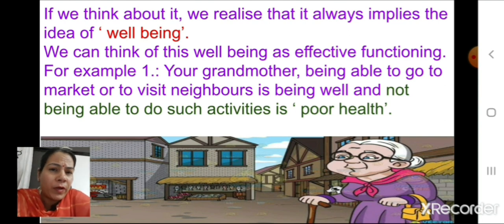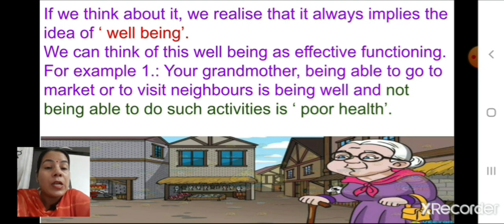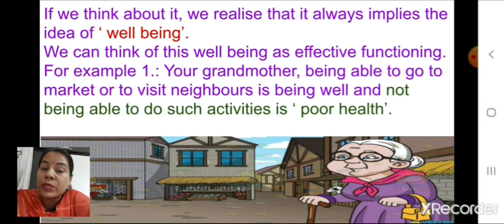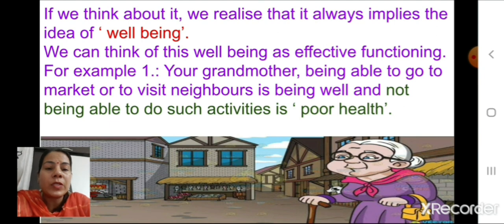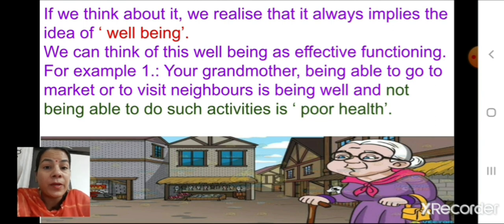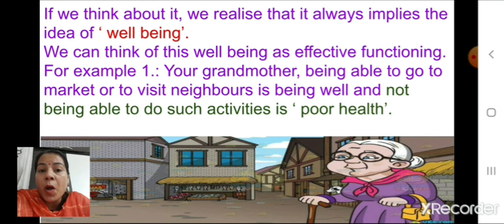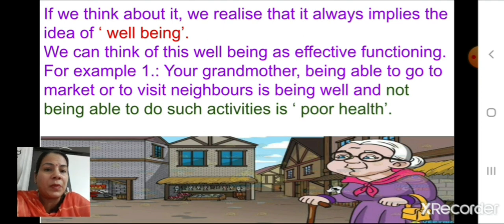In that condition, we say grandmother is perfectly all right and not sick. The opposite — an old lady not able to go out or visit neighbors due to a physical ailment — illustrates the other side. When a person is able to actively perform their work, we say the person is healthy. If they cannot walk properly or fulfill basic needs, we say the person is sick.